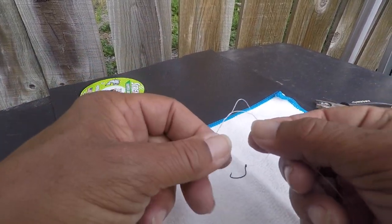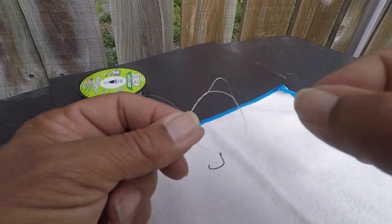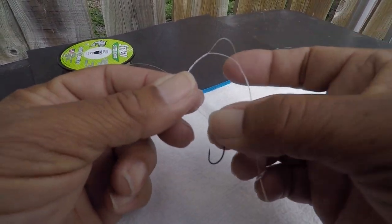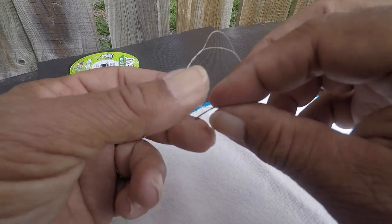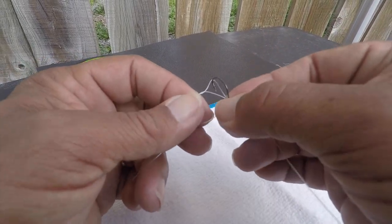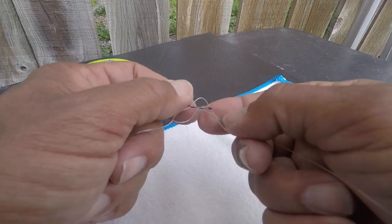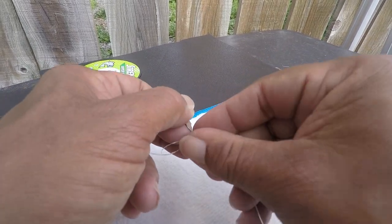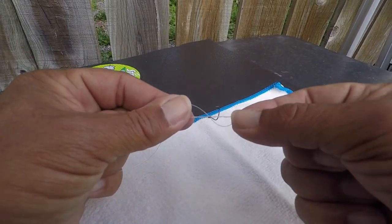All right, so now we have something like this, so what we want to do now is we want to take the hook, put it through that little space that we left there, just pull it through and then cinch it all down together.